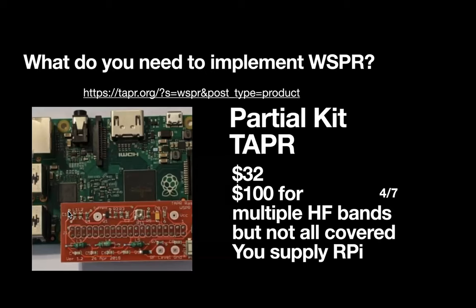The TAPR — Tucson Amateur Packet Radio — builds what they call a partial kit. It's headers to go on a Raspberry Pi. These headers basically contain an RF generating source, which is nothing more than a square wave generator with a crystal. They've got some filters used for transmitting and receiving. You have to supply your own Raspberry Pi. Each one of those hats in kit form is $32, partially assembled. If you want all the bands, you're going to spend about $100.